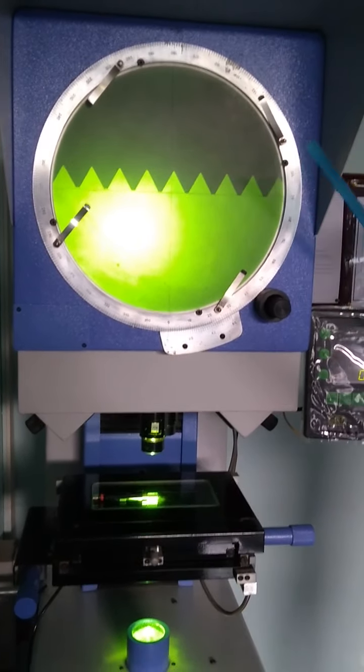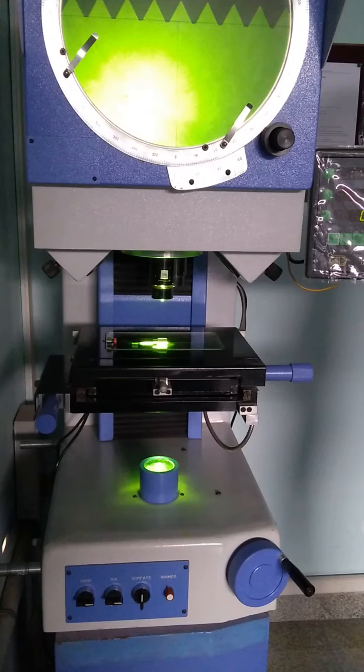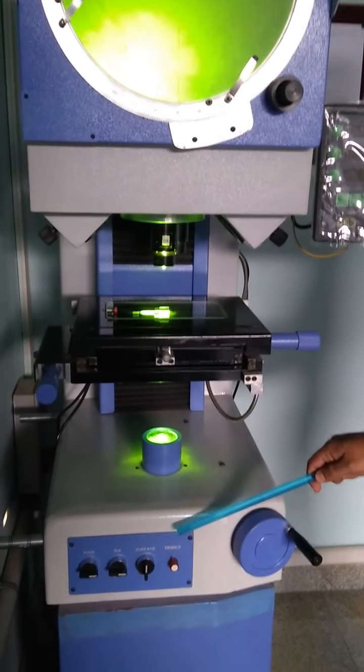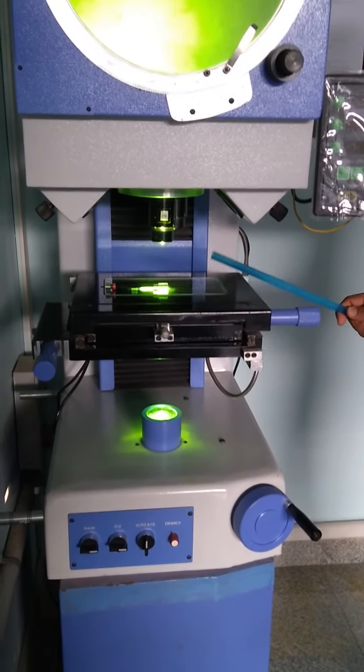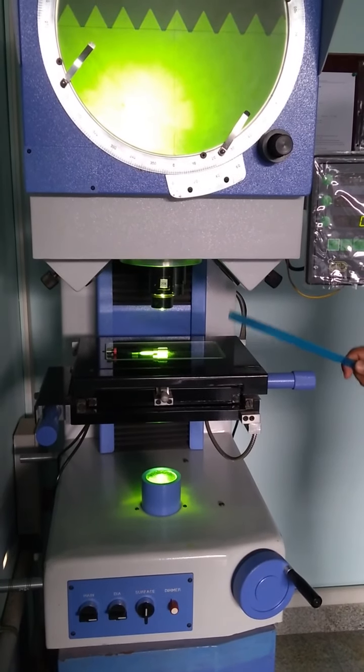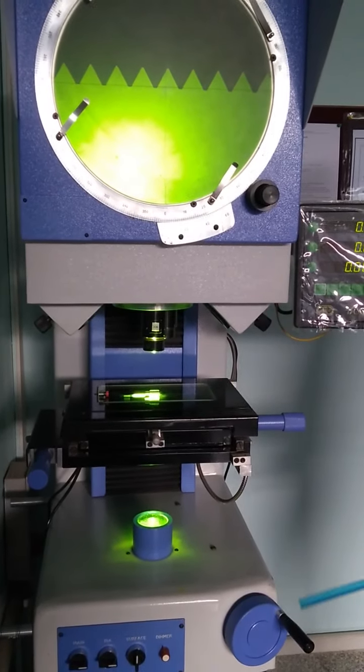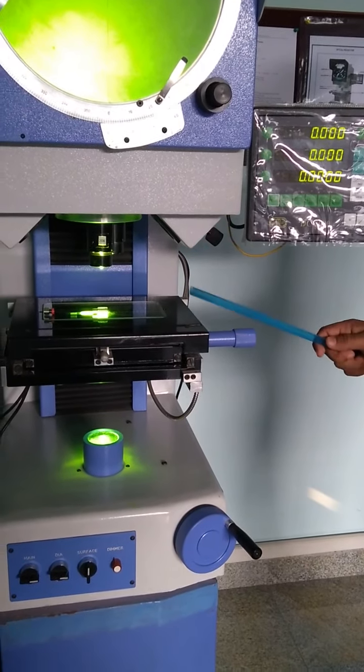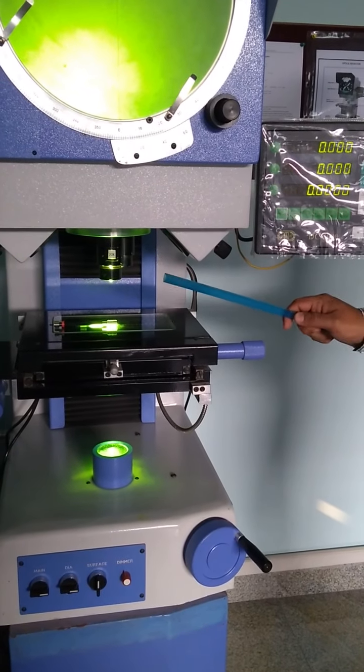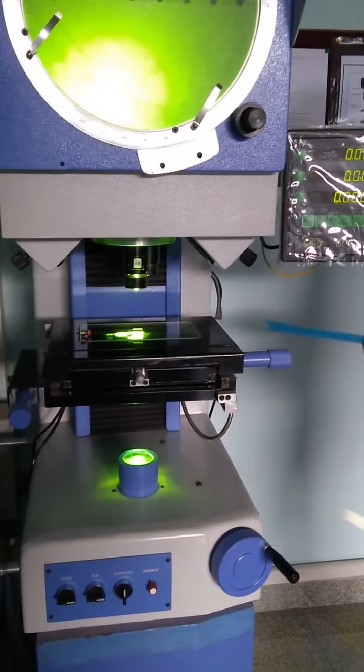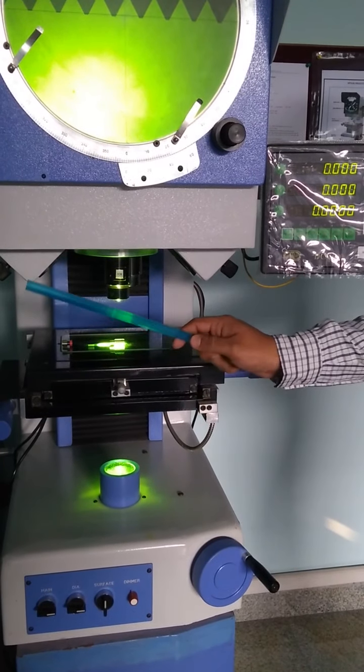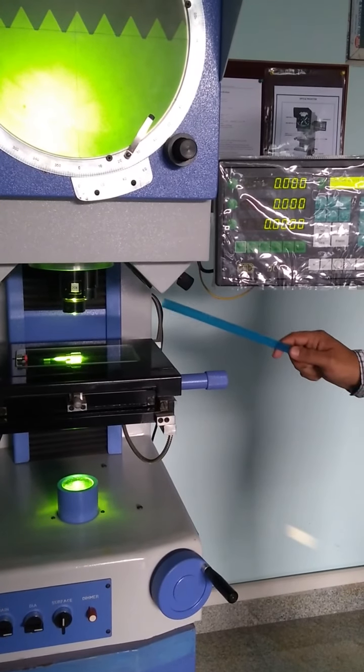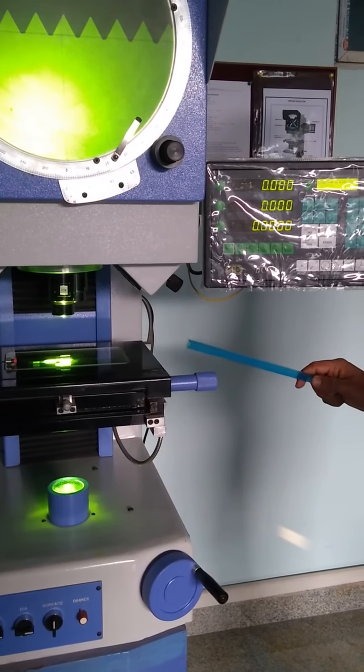Measuring of the sample can be done on projected screen. Now we will understand the important parts of this profile projector. The first and foremost is the supply control units which is used to regulate the amount of incident light on the specimen to reflect it back on the screen. Then there is an elevating screw here which can be operated to rise or lower the platform. The platform is equipped with vertical movement as well as horizontal movement. The vertical movement is enabled to find out the major diameter, minor diameter and depth of the thread, whereas the horizontal movement of the platform can be done to find the pitch of the given thread.